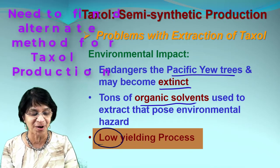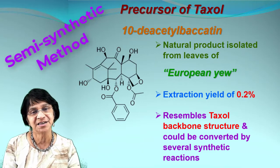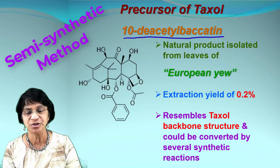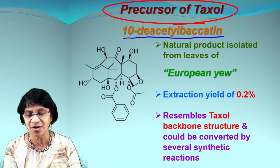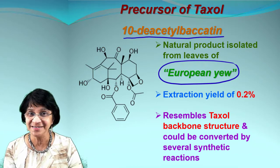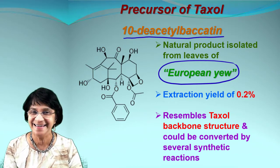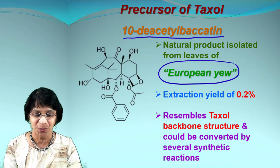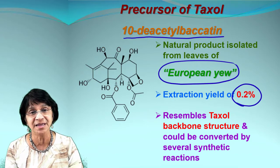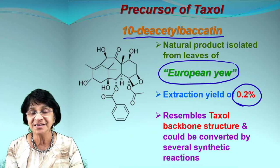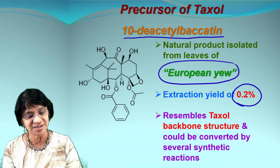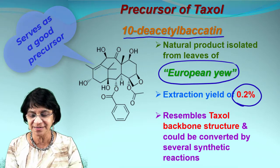So what do we use for this semi-synthetic method of producing taxol? There is 10-deacetylbaccatin — this compound which you see over here — that's a natural precursor of taxol, and it is found in European yew trees. This particular plant species can be cultivated easily, unlike the Pacific yew tree which takes hundreds of years to grow. When we extract this compound, the yield is 0.2%, and you may think that's still low. But remember, the yield for taxol was only 0.004%, so this is almost 50 times higher yield.